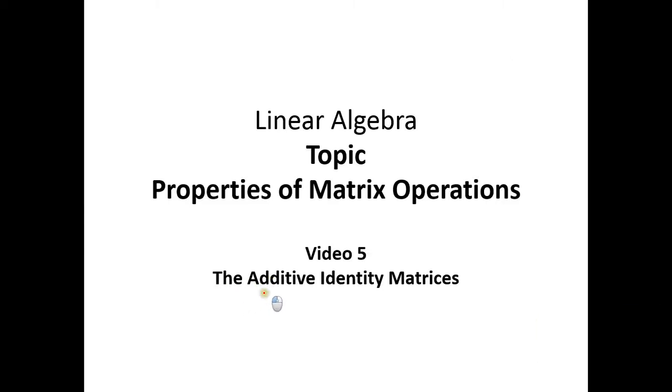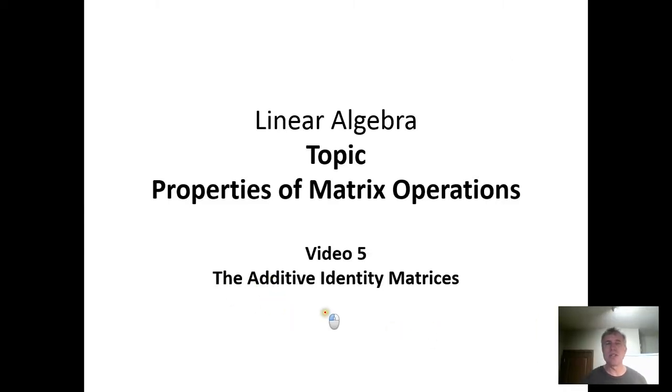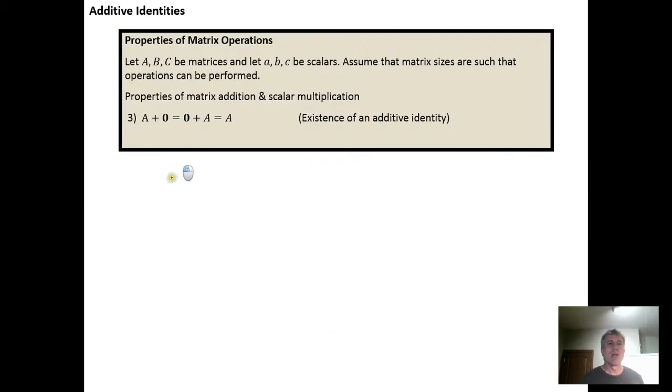In this video we want to briefly discuss additive identity matrices. Remember from our Properties of Matrix Operations video, we saw that we have an additive identity for matrices, so there exists a matrix that is the zero matrix such that when we add it to A we get A.